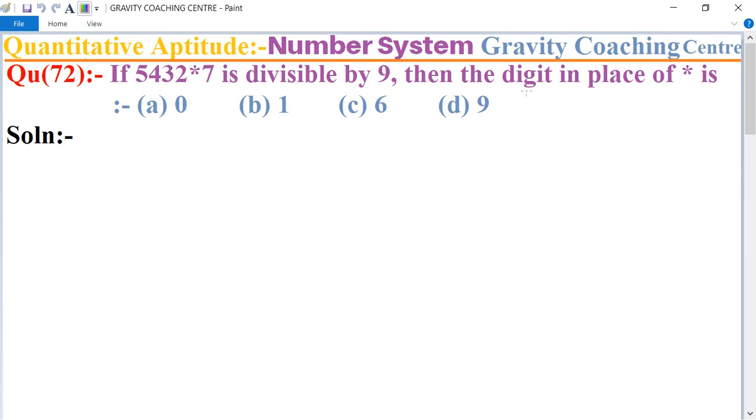by 9, then the digit in place of star is what? In this question, we know that a number is divisible by 9 if the sum of its digits is a multiple of or divisible by 9.